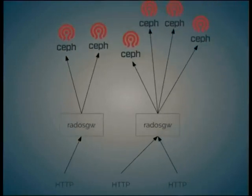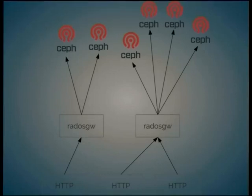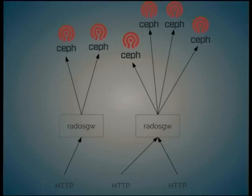So the architecture looks like this: an HTTP client — whether it's the Python Swift client, Boto, or any S3 client — goes through RADOS Gateway, and through as many RADOS Gateways as we want for load balancing, then retrieves objects from the object store.